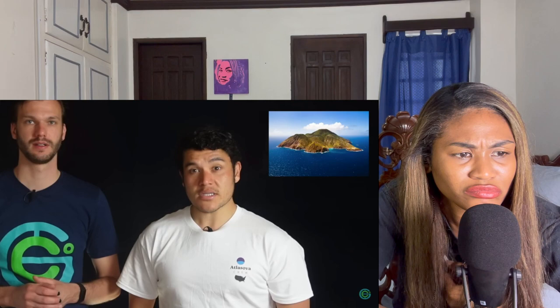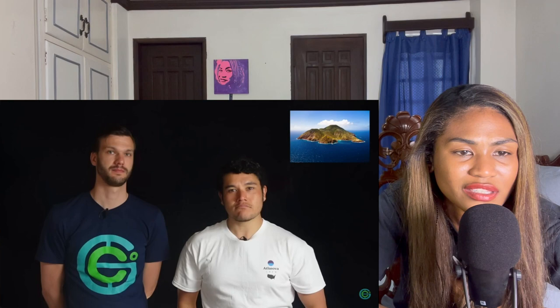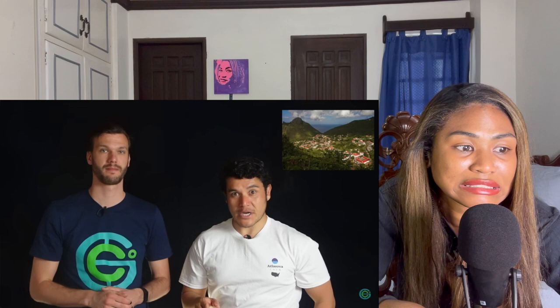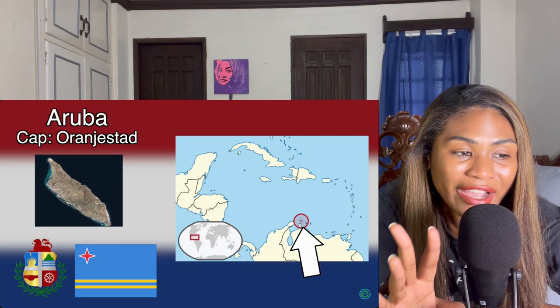Next up is Saba, another special municipality. The capital is called The Bottom — an interesting name for a capital. They're nicknamed the 'Unspoiled Queen of the Caribbean.' It's the smallest special municipality in the Kingdom of the Netherlands with only about 2,000 people. It has the highest point in the entire Kingdom of the Netherlands — Mount Scenery, an active volcano at 887 meters tall. It also has the world's shortest airport runway, the Juancho E. Yrausquin Airport, only about 400 meters, dropping right into a steep cliff — literally the only place they could build an airport on this small, steep volcanic island.